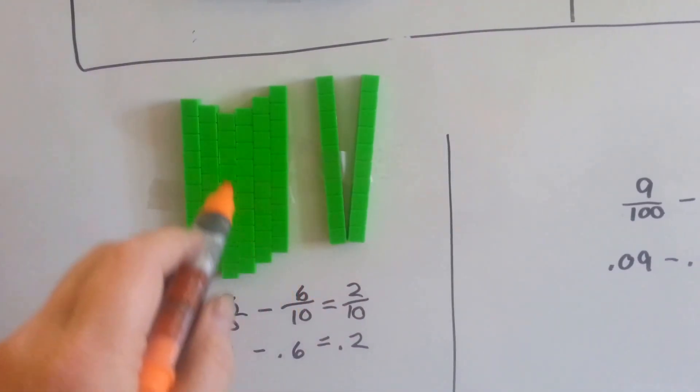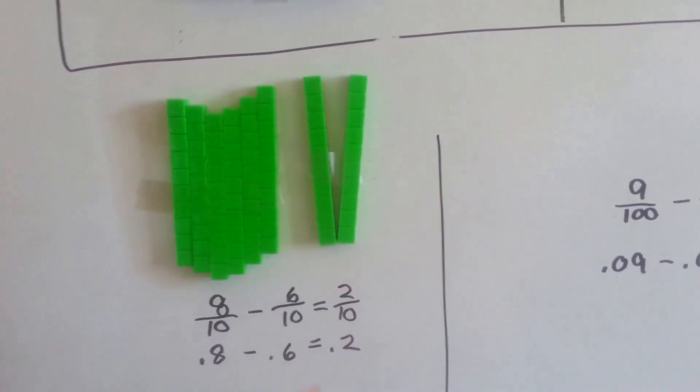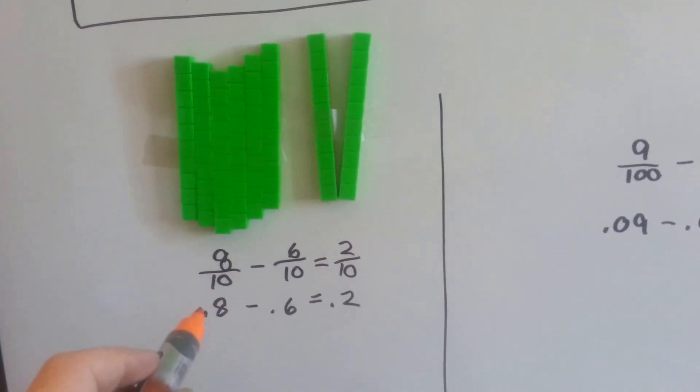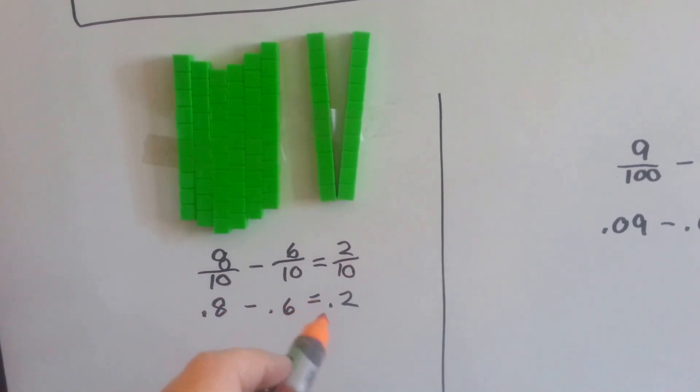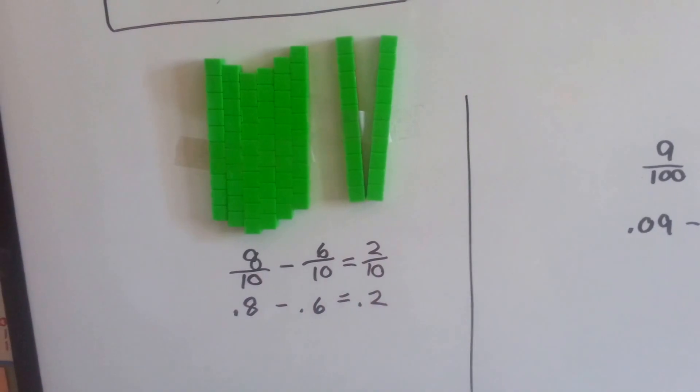And I took six of them away, one, two, three, four, five, six, that would leave me with two of them, two tenths. Point eight minus point six equals point two, eight tenths minus six tenths equals two tenths.